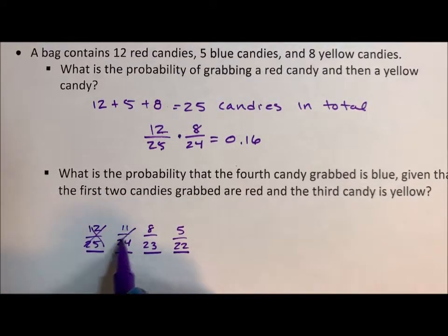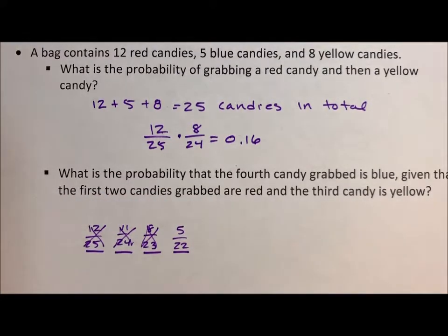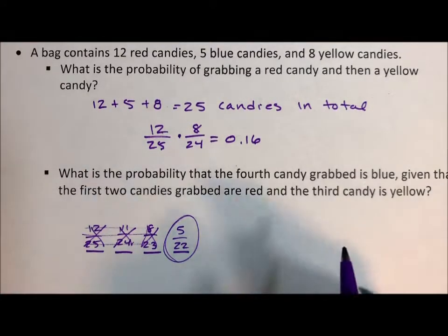These are guaranteed. We're not calculating those probabilities. This is the only one we care about, is that 5 out of 22. We're saying this is done. That is a done deal. We're not calculating those three. We just want the probability of this fourth candy, this 5 out of 22.